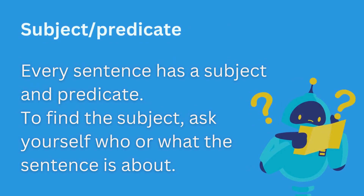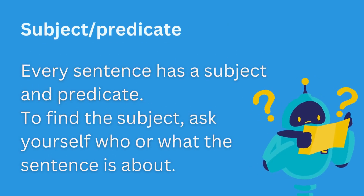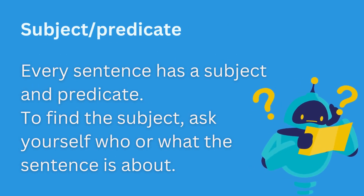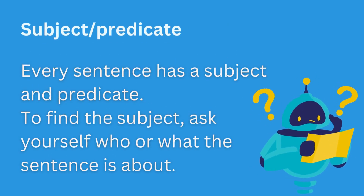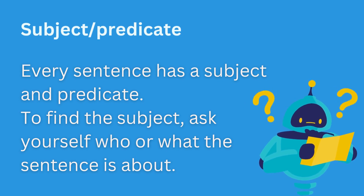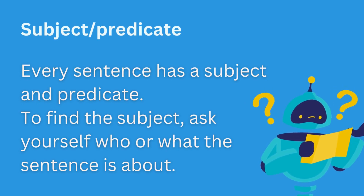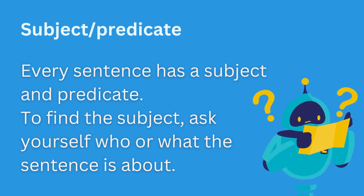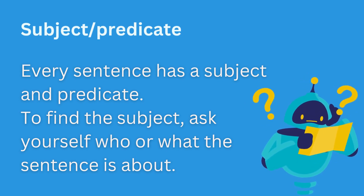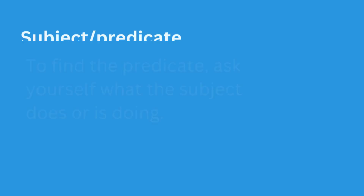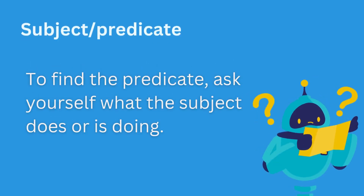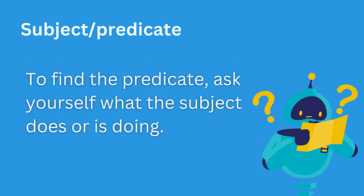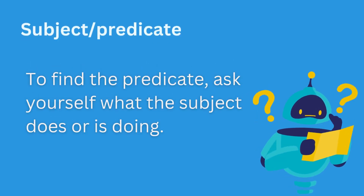Every sentence has a subject and a predicate. To find the subject, ask yourself who or what the sentence is about. To find the predicate, ask yourself what the subject does or is doing.